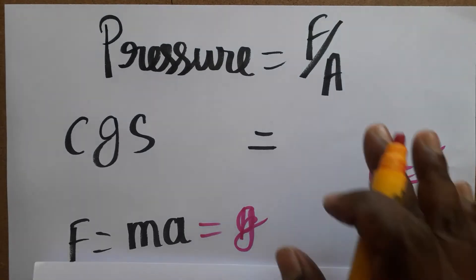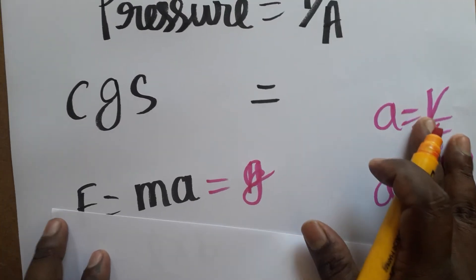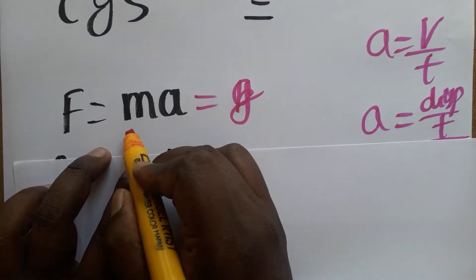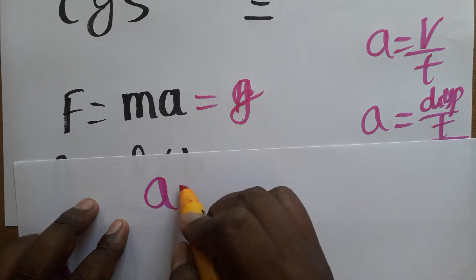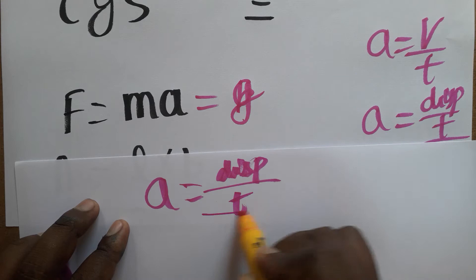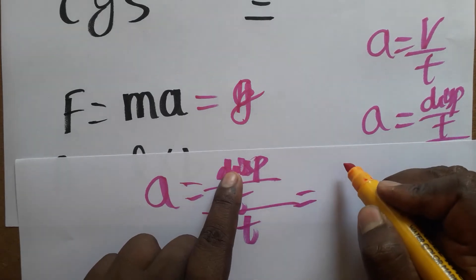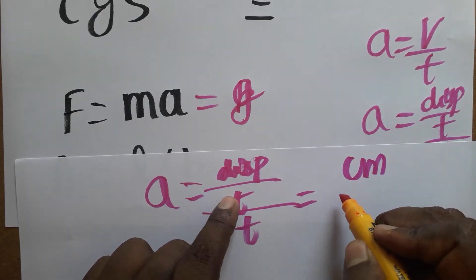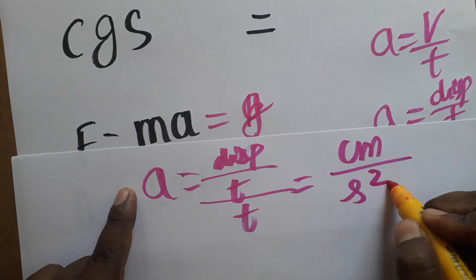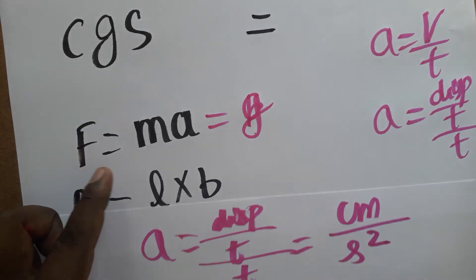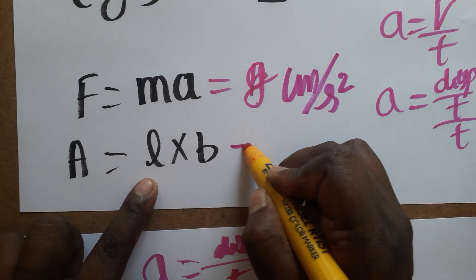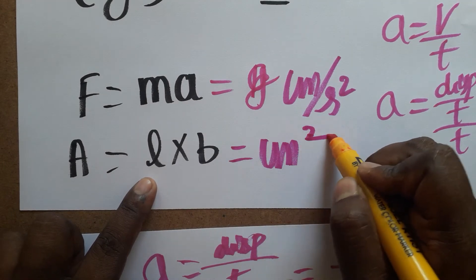So we are going to find the pressure unit in the CGS system. Force is equal to mass into acceleration. In the CGS system, displacement unit is centimeter and time unit is second, so acceleration is centimeter per second squared. Area is centimeter times centimeter, which gives centimeter squared.